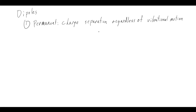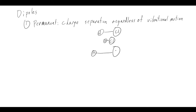If you picture HCl, it's not static - it's vibrating back and forth. The atoms move close together and then further apart, constantly oscillating. But throughout all of that motion, there's always this charge separation: chlorine is always minus, hydrogen is always plus. That is the permanent dipole.